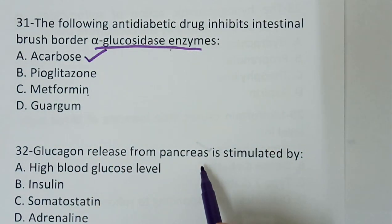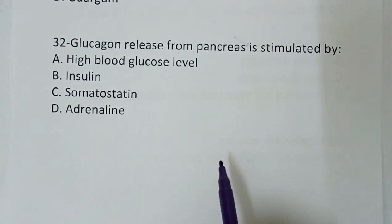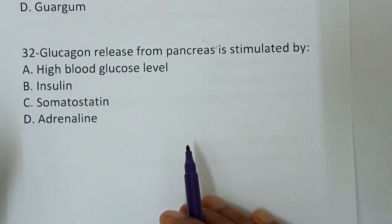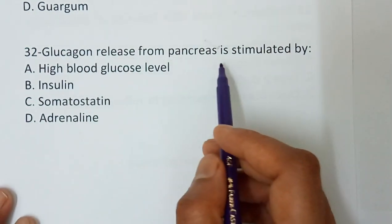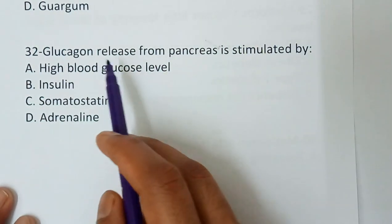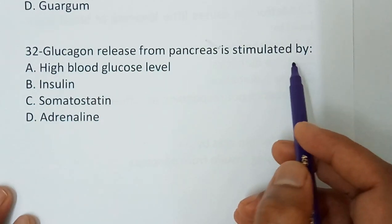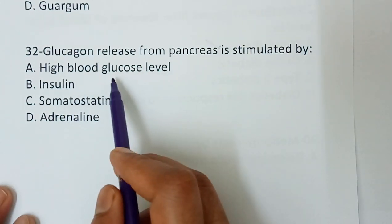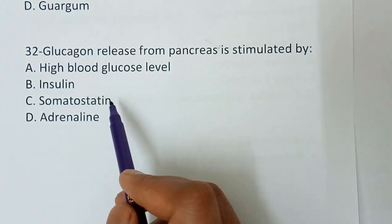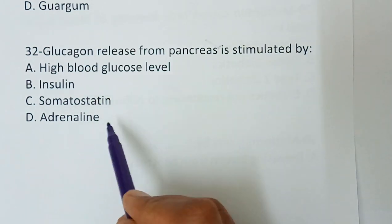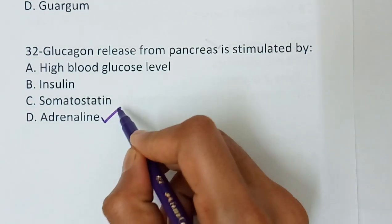Question number 32 — the last question of this video. Glucagon release from the pancreas is stimulated by: option A, high blood glucose level; option B, insulin; option C, somatostatin; option D, adrenaline. The correct answer is adrenaline.